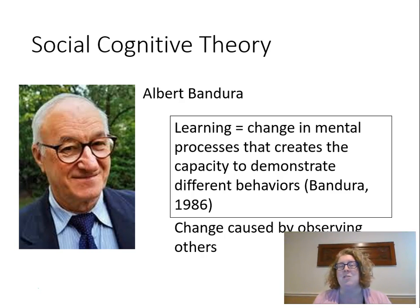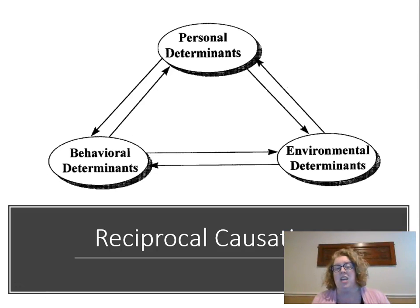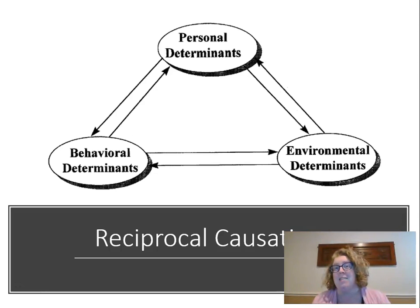We have this idea of reciprocal causation — behavioral, personal, and environmental determinants. We already know about environmental and behavioral determinants: a change in behavior caused by your environment through a punishment or reward. We also have personal determinants — how we feel. If a teacher says 'you did a really great job, you're really smart,' I'm going to feel better about myself and in return do better in math because I feel better about myself. That's a personal determinant. In social cognitive theory, I'm also concerned about that internal state.